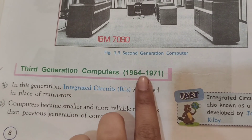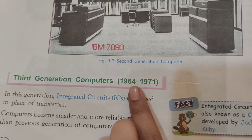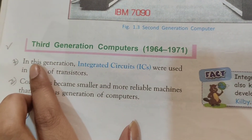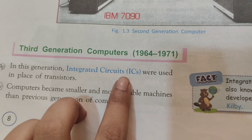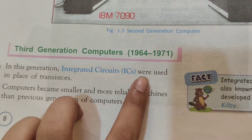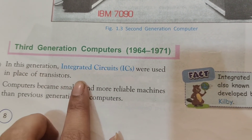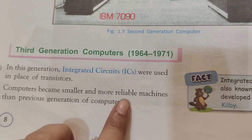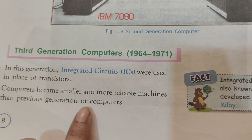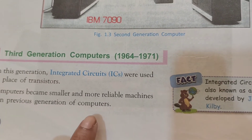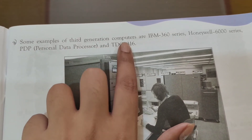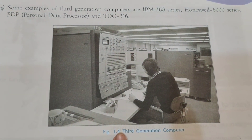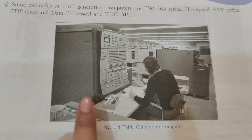Third generation computers is from 1964 till 1971. In this generation, integrated circuits — ICs — were used in place of transistors. Computers became smaller and more reliable machines than the previous generation. Here are a few examples written for the third generation computers, and this is the footage for the third generation computer.